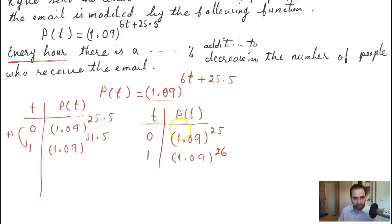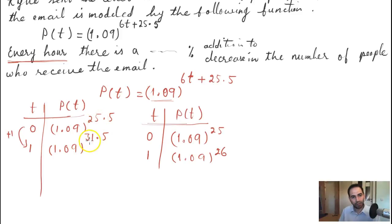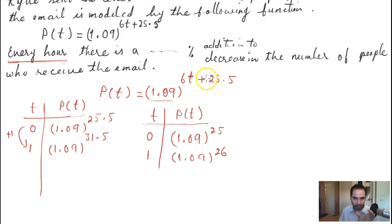If the function were like that — where each one-hour increment added just one to the exponent — I could know what's happening each hour. But in this function, every one-hour increment causes six more factors of 1.09 to be multiplied into the output, because the exponent is an expression (6t + 25.5), not just the variable t alone.